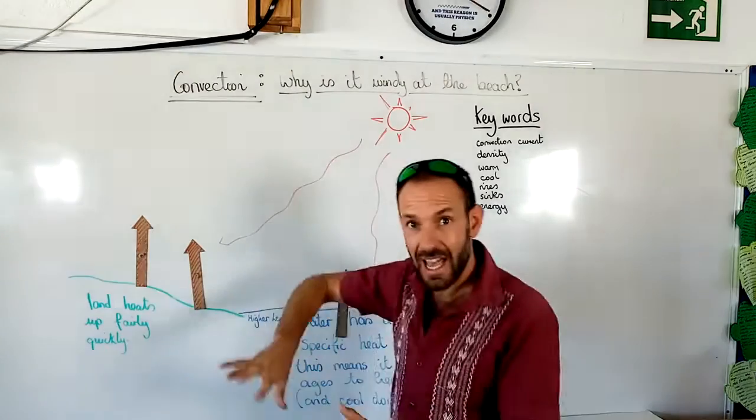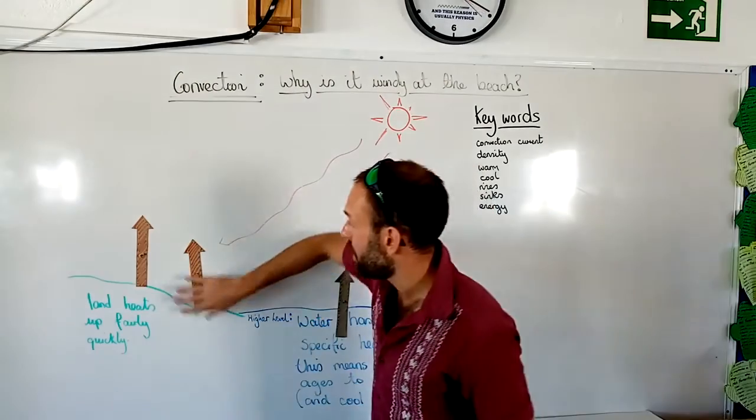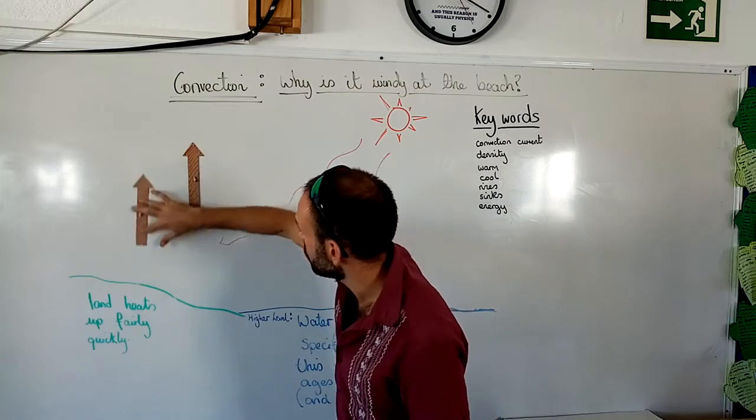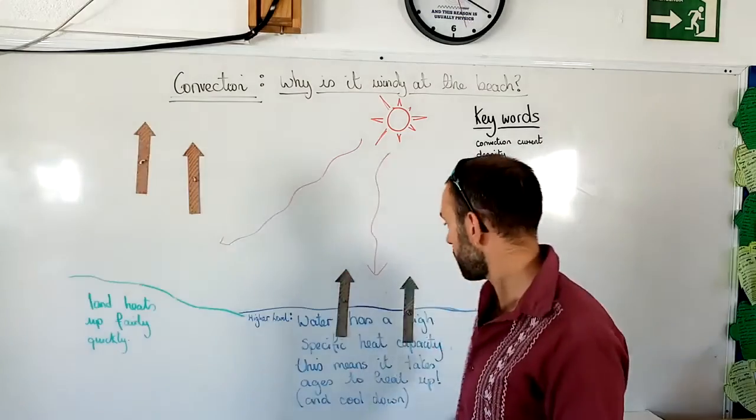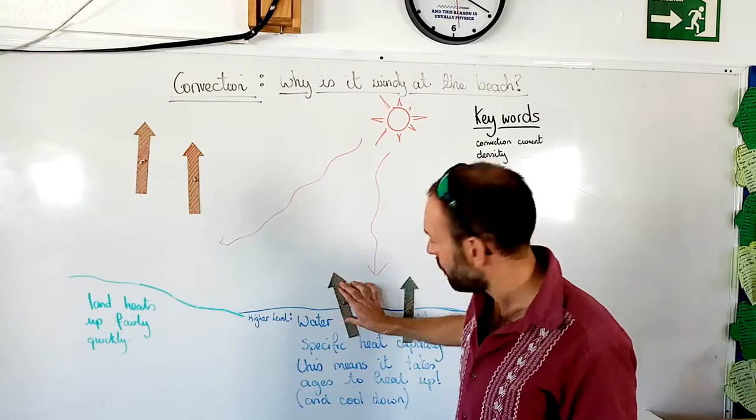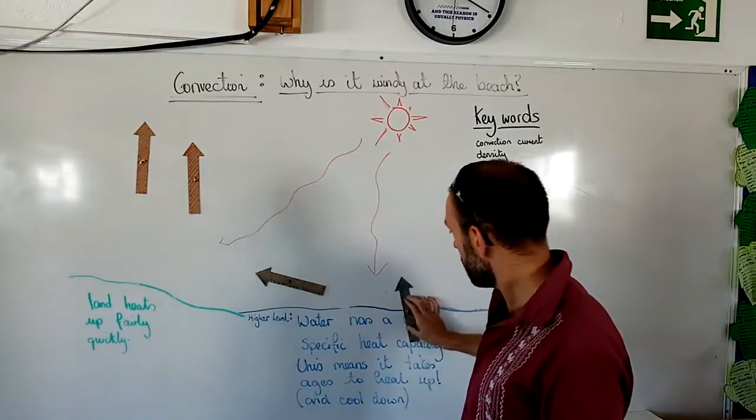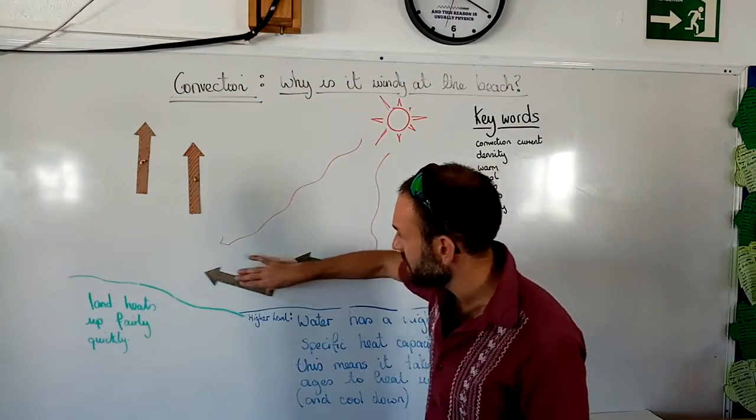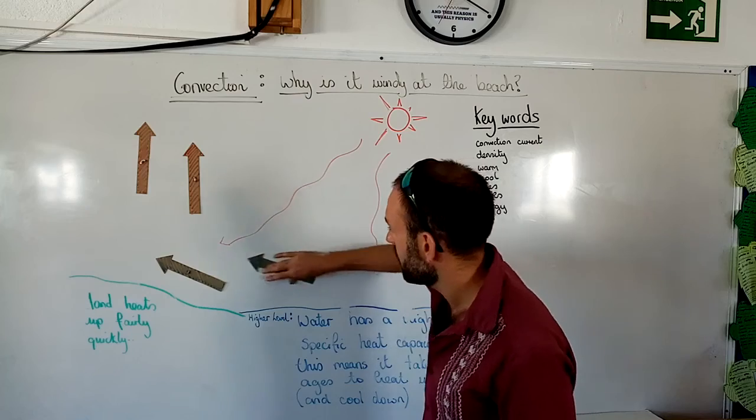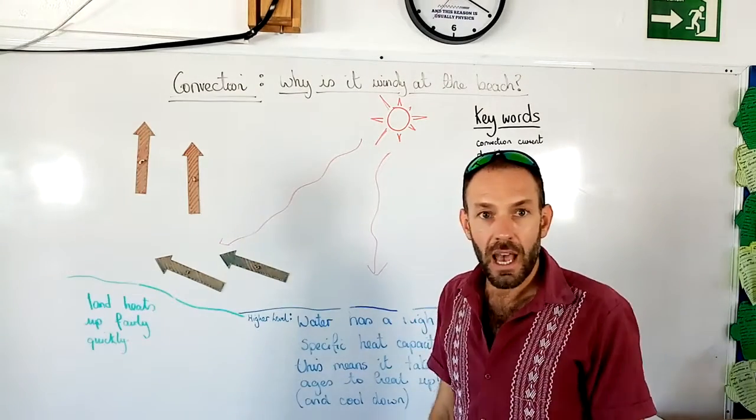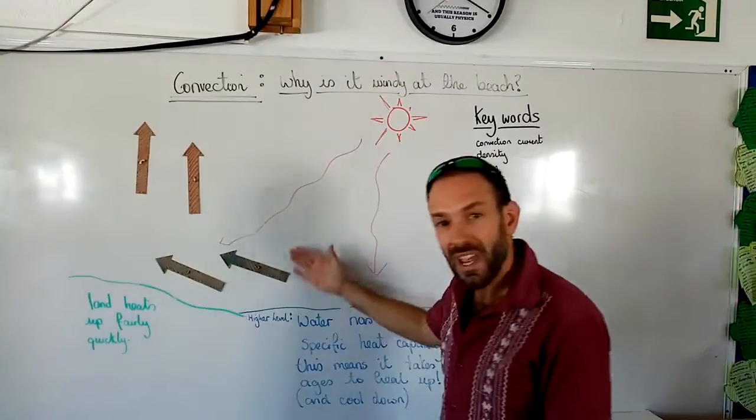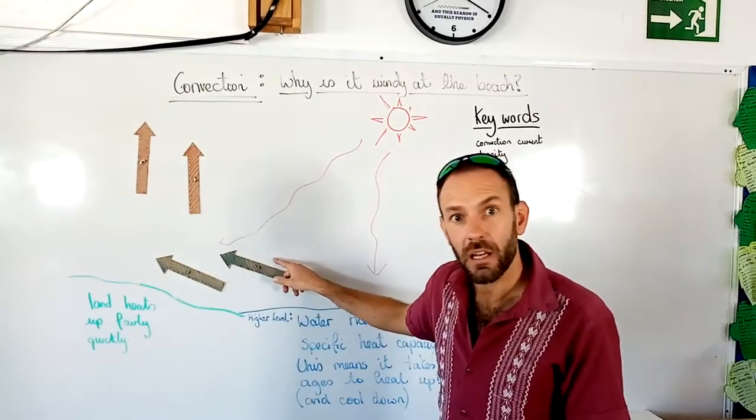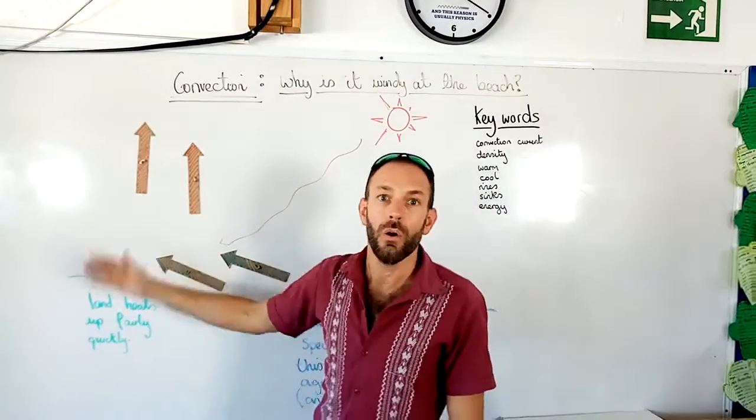So, this is what's going to happen to the air above the land. And it's going to get hot. And it's going to rise like this. What's going to happen now? The cool air. The cool air of the sea is going to take its place. And look at that. Wind. Air. Cool air coming in off the sea onto the beach.